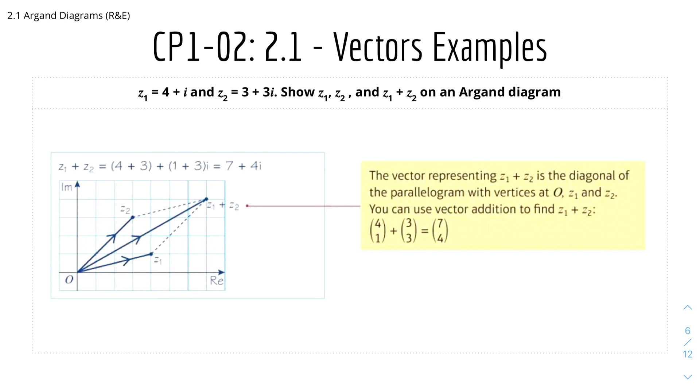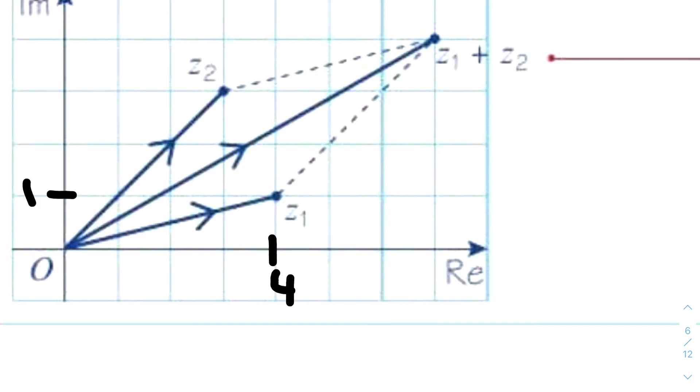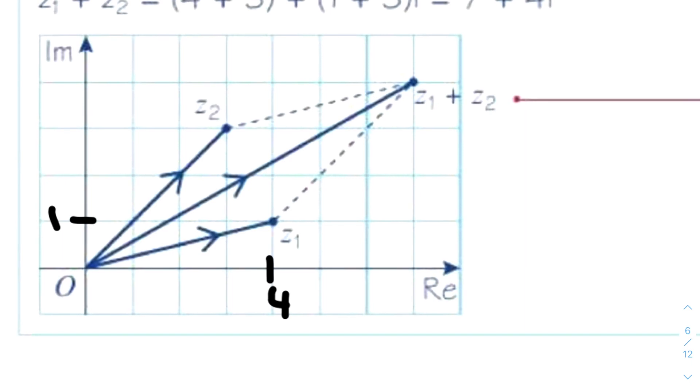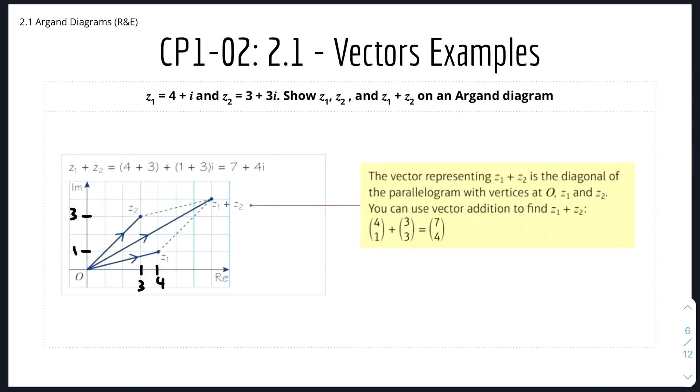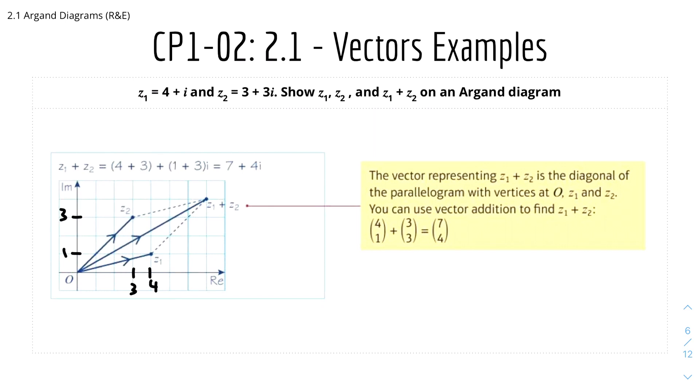Here we have vector examples for adding and subtracting. We have z1 equals 4 plus i and z2 equals 3 plus 3i. Show z1 and z2 on an Argand diagram. Here's z1, which is 4 plus i, so here's 4 and here's 1. z2 is 3 plus 3i, so here's 3 and here's 3. Show z1 plus z2 on an Argand diagram. The vector representing z1 plus z2 is the diagonal of the parallelogram with vertices at O the origin, z1 and z2. You can use vector addition to find z1 plus z2, which is 4, 1 plus 3, 3 equals 7, 4.